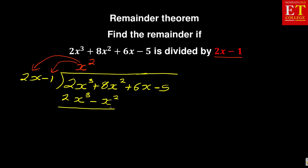Then you roll off and we're going to subtract. When we're subtracting, it will be 2x cubed minus 2x cubed, you'll get 0. And it will be 8x squared minus minus x squared — because of the two negatives, they become a positive. So it's 8x squared plus x squared, which gives you 9x squared.